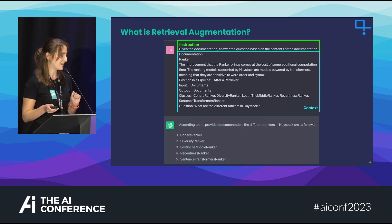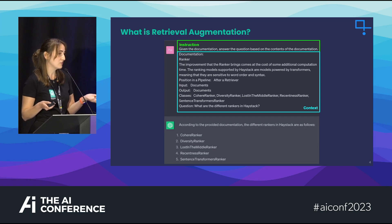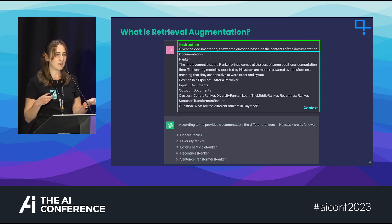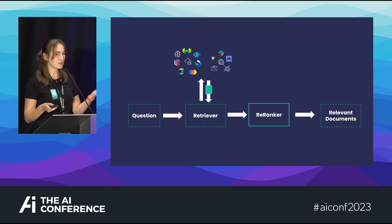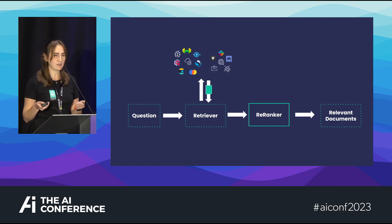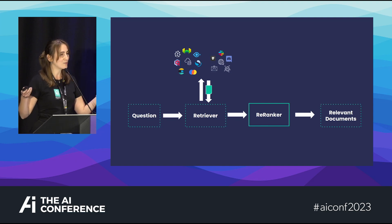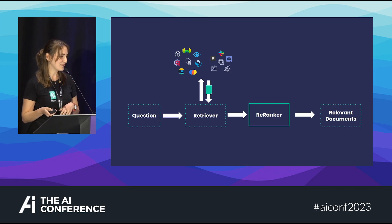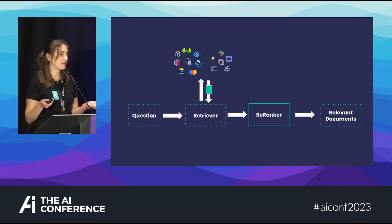One other thing before moving on: we talk about RAG a lot in terms of question answering, but what RAG does really depends on the instruction you provide. If I instruct it to give a summary, I've got a summarization application. If I say give me a broad explanation on a wider topic, I've got long-form question answering. To retrieve the relevant context we have a retriever component, which can be connected to a database like Weaviate, Milvus, or OpenSearch, or to an API, the web, Slack, Discord, and so on. We often also have a re-ranker or ranker module after these retrievers.